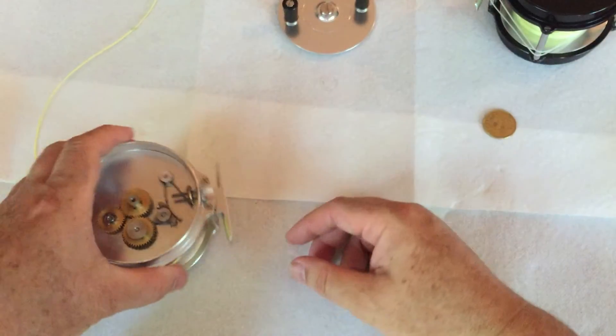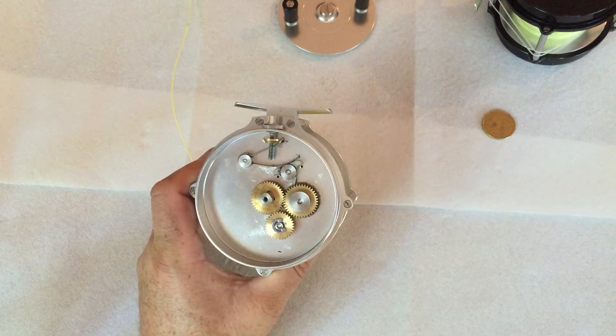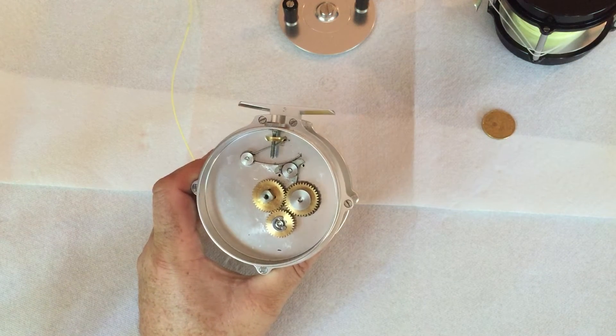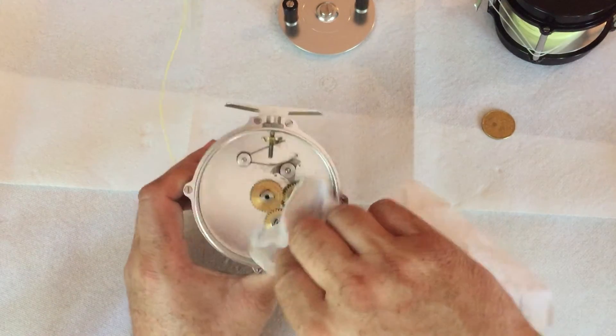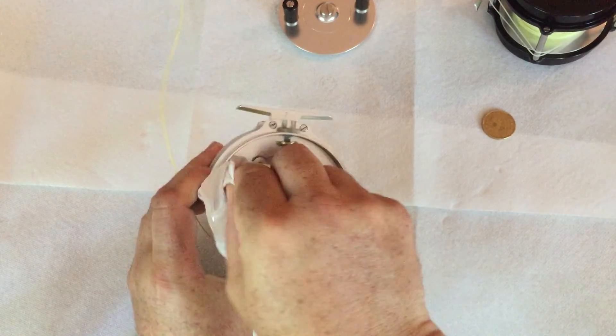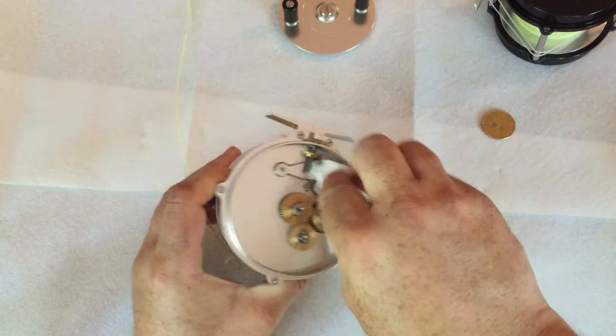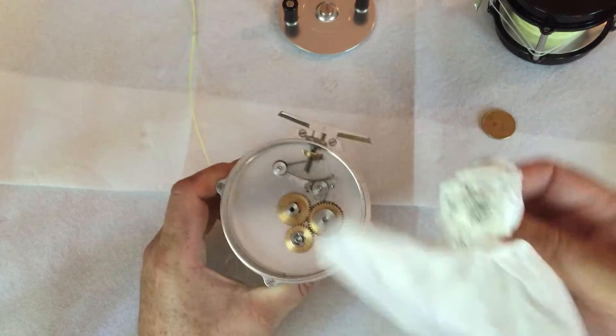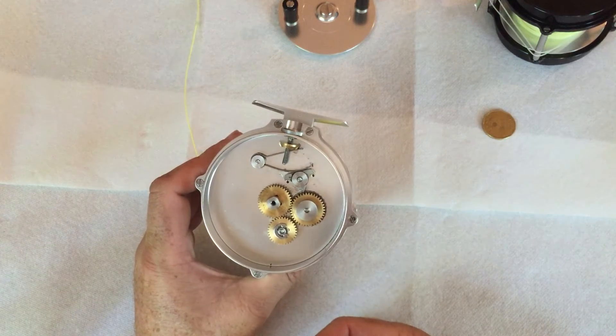The way I like to do it is, once the reel is open, as you can see this one is fairly clean, I just take some Kleenex and wipe it down, clean it out, keep any grime or dirt or sand out. If it's too dirty, if there's a bunch of sand or grit in there, I'll rinse it out with water.